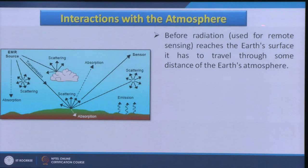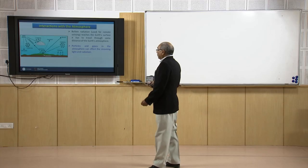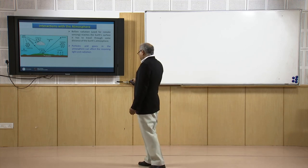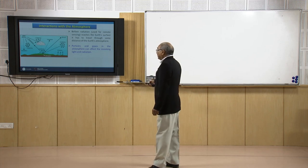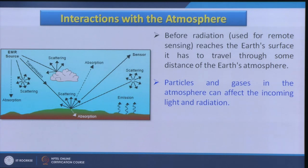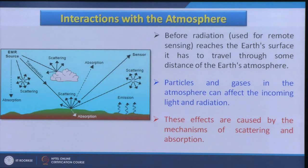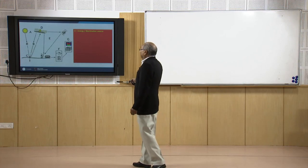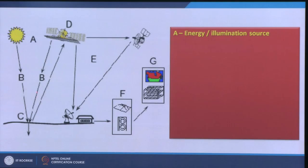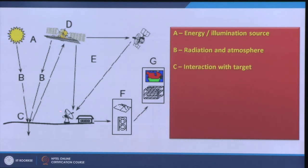Before radiation used in remote sensing reaches the earth's surface, it has to travel through some distance from the earth's atmosphere. The total distance which it travels back is around 840 kilometers when recorded by the satellite, and before that it is coming from the sun which is very far. Particles and gases present in the atmosphere can affect both the incoming and outgoing radiation. These effects are caused by the mechanisms of scattering and absorption phenomena.